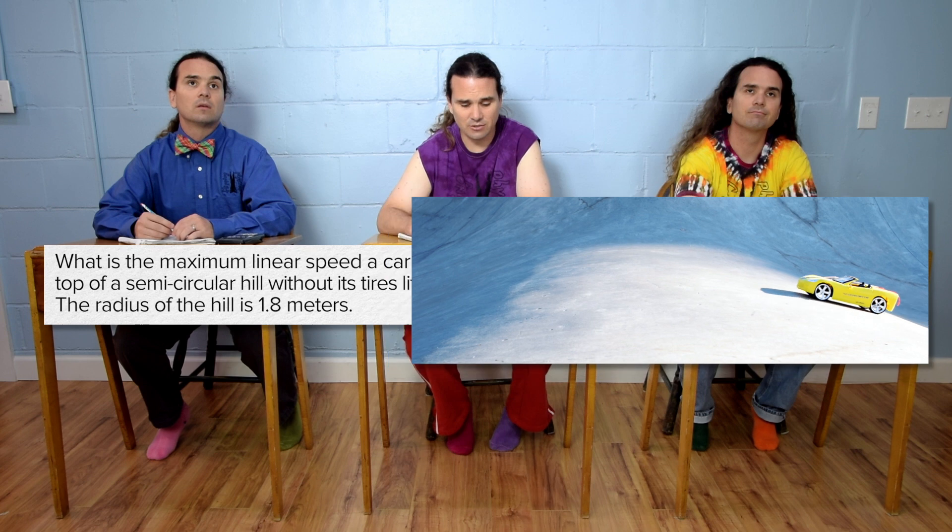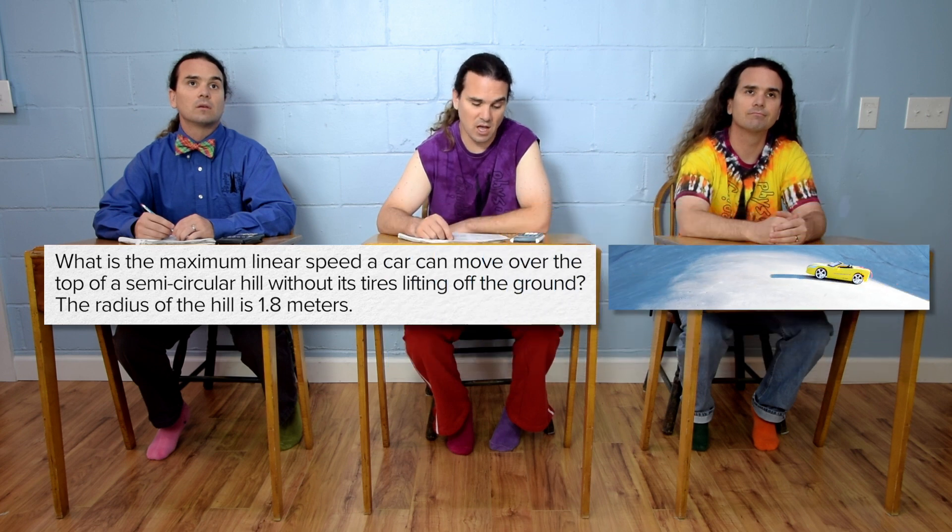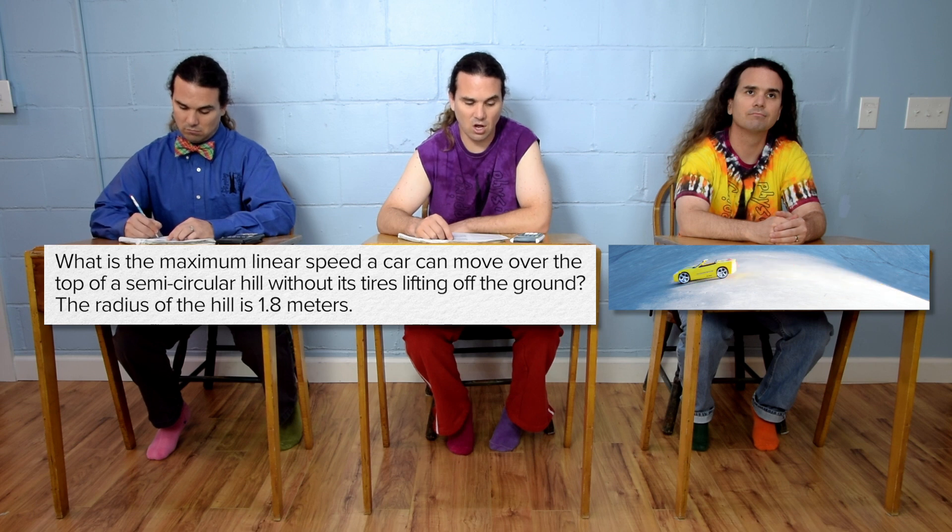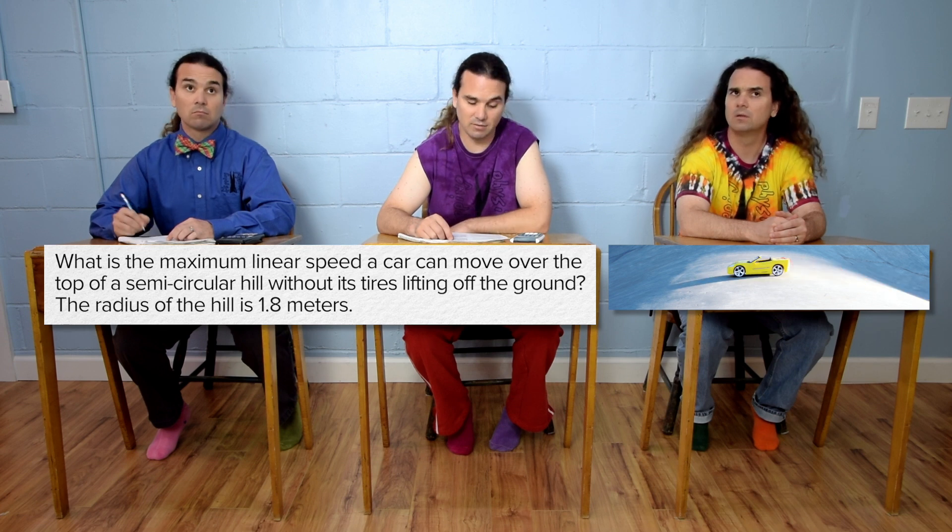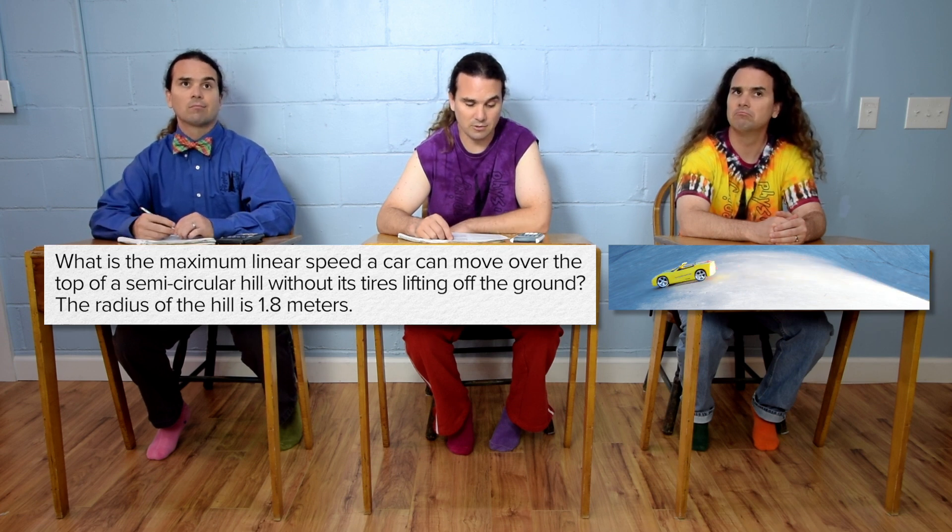What is the maximum linear speed a car can move over the top of a semicircular hill without its tires lifting off the ground? Is there more? The radius of the hill is 1.8 meters.